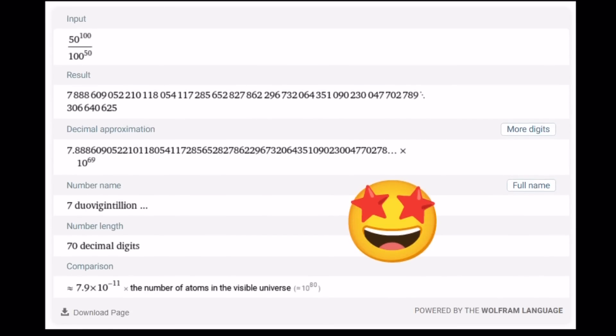And you're like, wow, this is crazy. So a couple facts. The result is that number that you see right there. I'm not going to read it, but the decimal approximation tells you that this is a 70-digit number. So it has 70 digits, 7.888 something times 10 to the power 69. You can start reading it as 7 duovigintillion. And it has 70 decimal digits, as you can see.